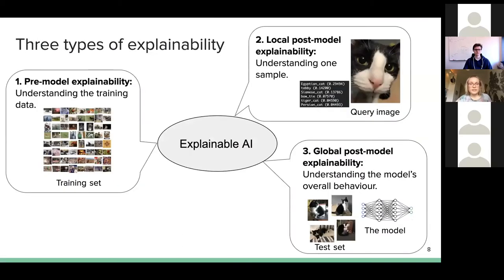Explainability can be roughly divided into three different categories. The first is pre-model explainability — trying to understand the training data, what happens before you train your model. Then there is local post-model explainability — after you have trained the model, you want to understand one sample and its prediction. And then there is global post-model explainability — understanding the model's overall behavior, for example using a test set.